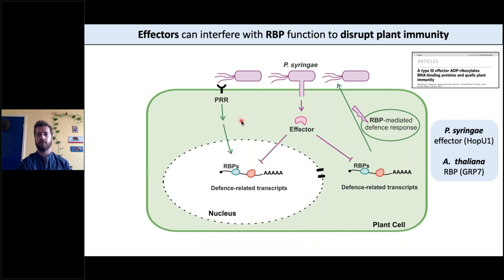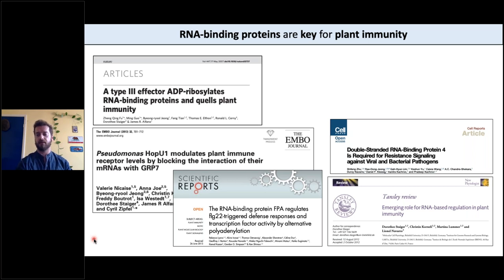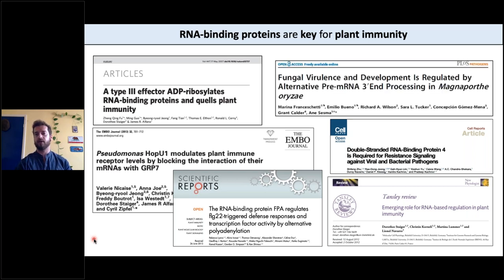A beautiful example was a paper published in Nature in 2007 by the Alfano lab, in which the effector of Pseudomonas syringae called HOP-U1 can actually target an RNA binding protein of Arabidopsis thaliana called GRP7. By doing so it disrupts plant immunity. So we know that RNA binding proteins are important for plant immunity, that some can be targeted by pathogen effectors, and even that they are important for pathogenicity. But all these studies have been individual papers describing one or a small bunch of RBPs involved in plant immunity.